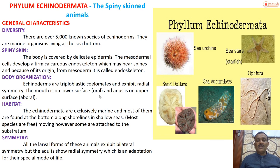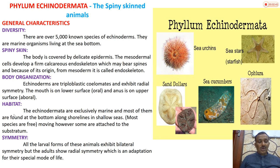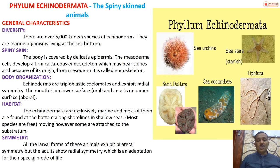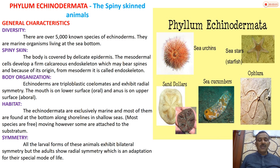The mouth is on the lower surface - what we call oral - and the anus is on the upper surface - what we call aboral. Now, regarding habitat: echinoderms are exclusively marine, and most of them are found at the bottom along shorelines.